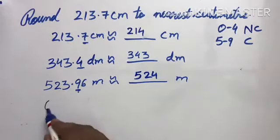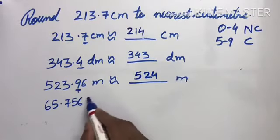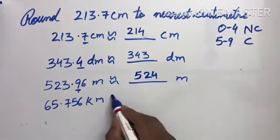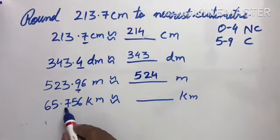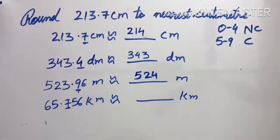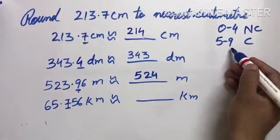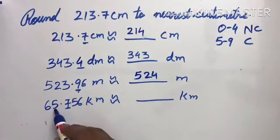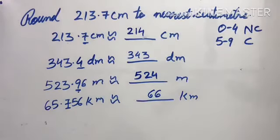Now 65.756 kilometer to nearest kilometer. The digit after the point is 7. 7 comes between 5 and 9, so we have to change. The 5 becomes 6. It means 66 kilometer. Understood?